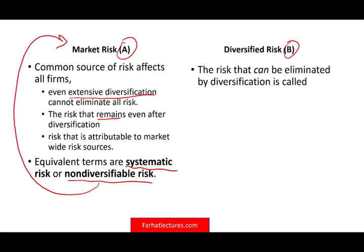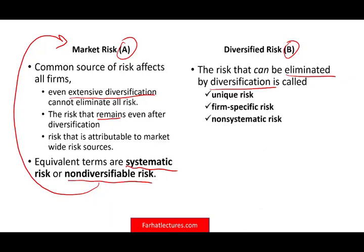The diversifiable risk is the risk you can spread out — this is the firm-specific list. This is the risk that can be eliminated by diversification, so don't expose yourself to Tesla alone; expose yourself to several other companies. This risk is called unique risk because it's unique to the company, also known as firm-specific risk or non-systematic risk, as opposed to systematic risk.